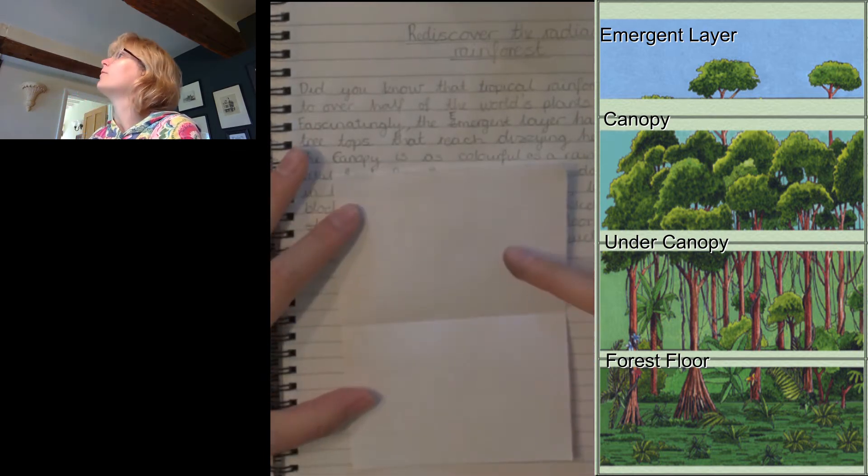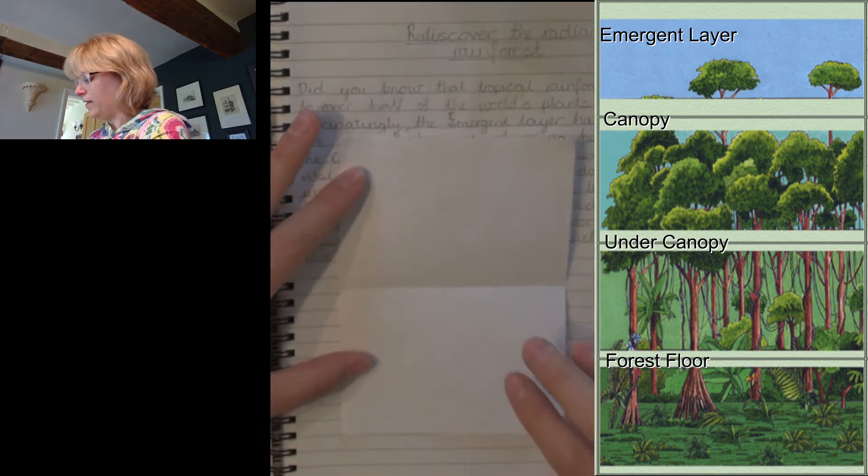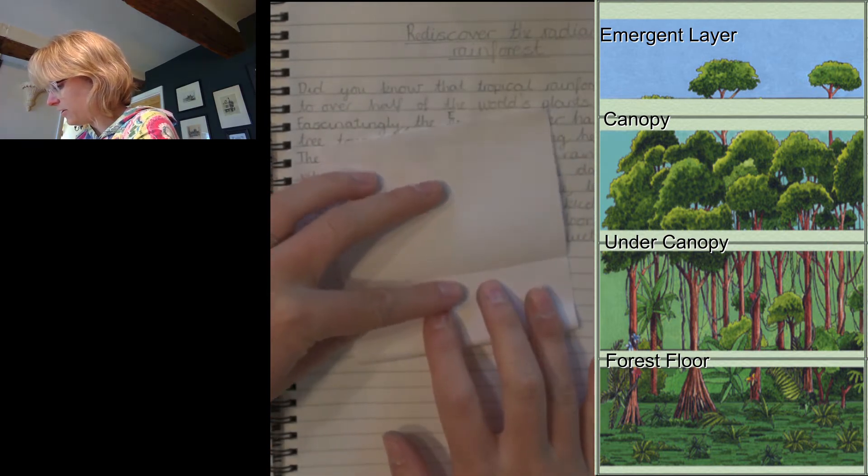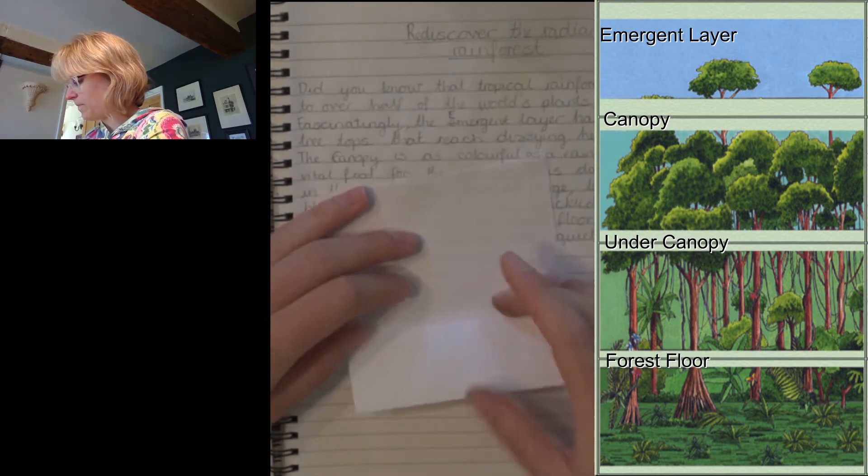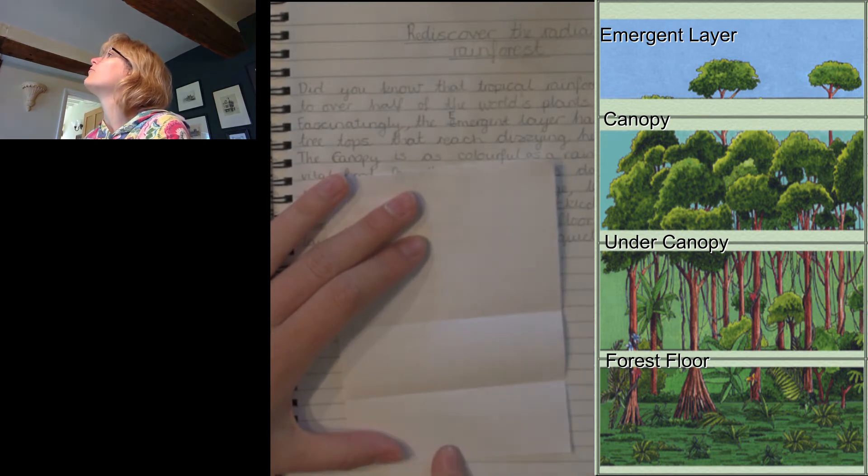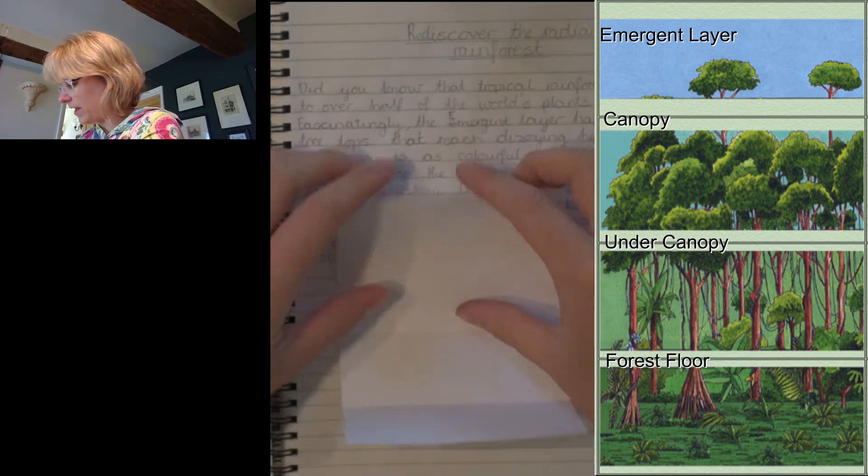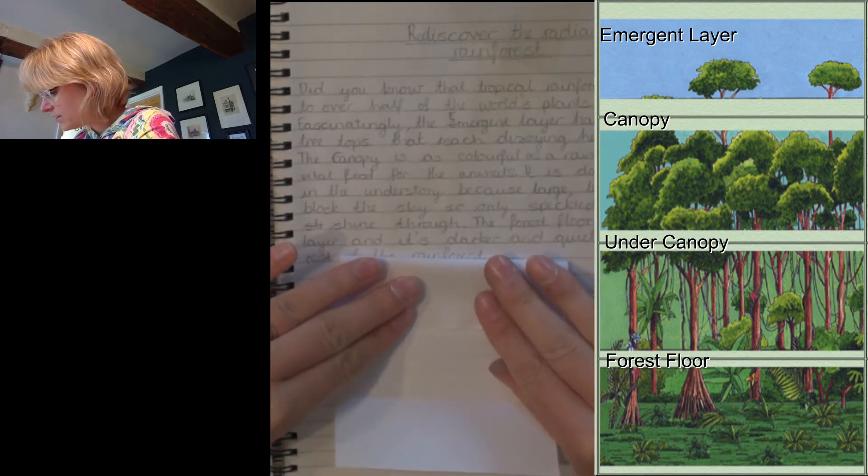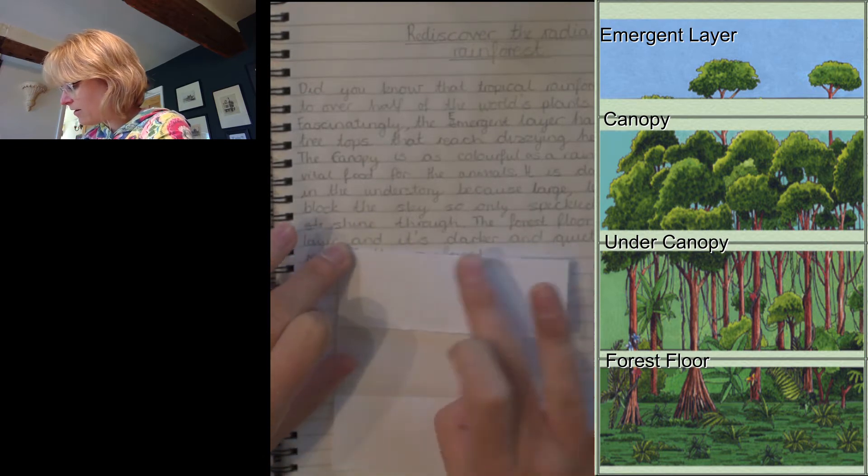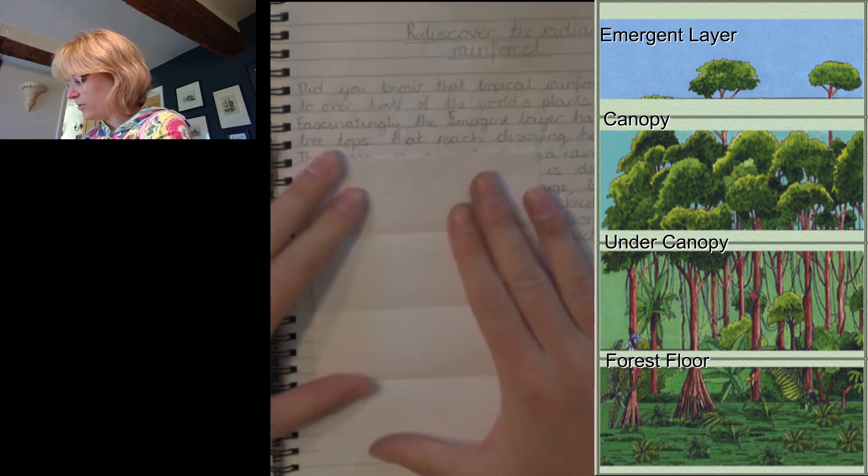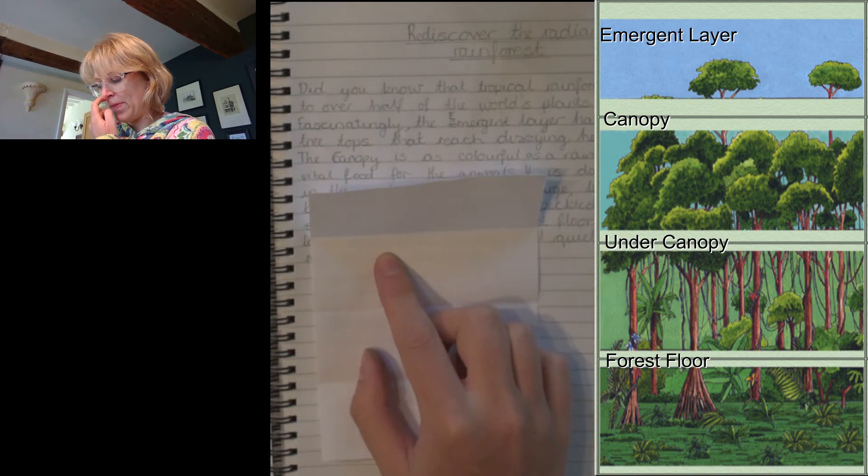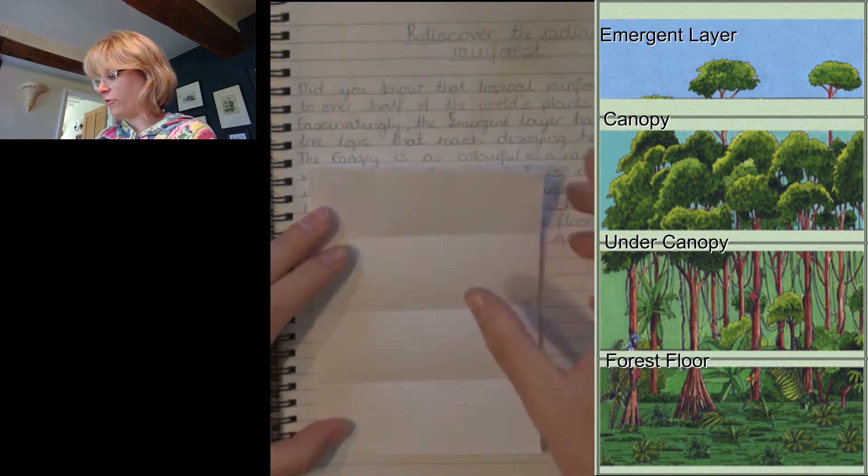So we're going to fold it in half like that. So now we've got two layers, so we're going to split this section in half, which will be the forest floor and then the under canopy, and then this in half. We've got the emergent layer and then the canopy, under canopy, forest floor.